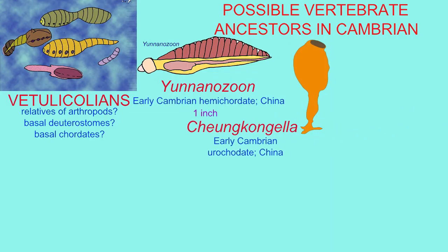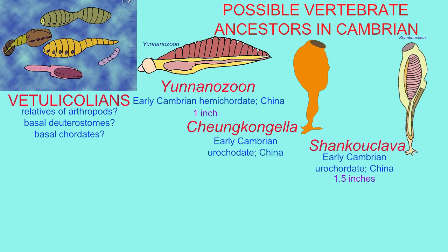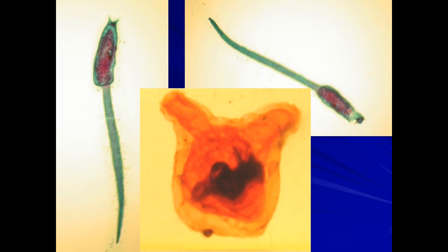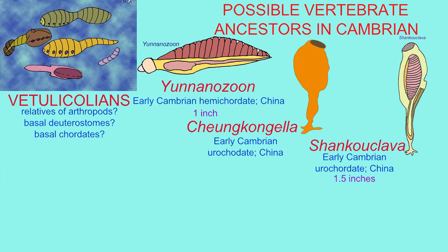There are fossils in the early Cambrian which have been classified as urochordates. These are true chordates; in modern members, in addition to the pharyngeal slits which are present in the adults, the notochord is also present in the larvae.